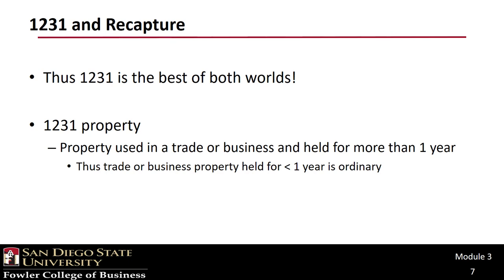It's property used in a trade or business and held for more than one year. That captures all of the not-capital property we just discussed. As long as it is held for a year, we can get capital treatment for gains and ordinary treatment for losses. This is great news, but I'm going to warn you, it won't last.